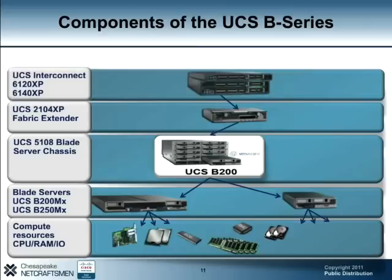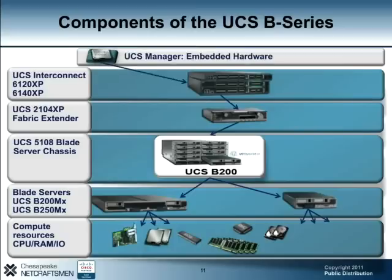The fabric interconnect provides the management and communications backbone for the UCS B-Series blade servers and chassis. Fiber connections from the fabric extender are terminated on the fabric interconnect, which provides both LAN and SAN connectivity for all blades in the management domain. There are two fabric interconnect models. The 6120 XP is a 20-port system that can support up to 20 UCS blade server chassis — that is 160 B200 blade servers. The 6140 XP is a 40-port system that supports up to 40 UCS blade chassis and 320 B200 blade servers. The UCS Manager is embedded on the fabric interconnect and provides a central point of administration for all compute resources.